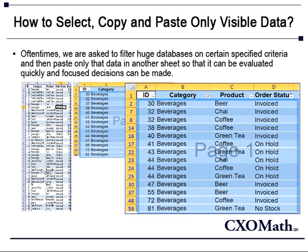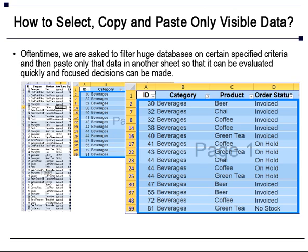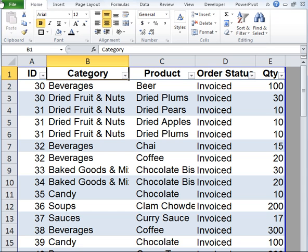Ideally, we would like to just select, copy, and paste only the visible cells. With the help of select visible cells, we can solve this problem. Let's look at an example.